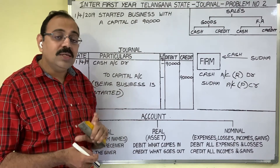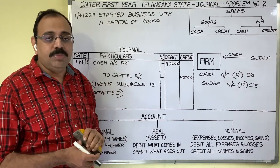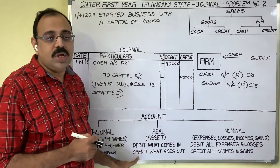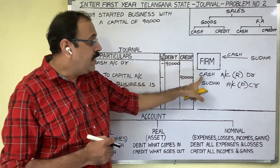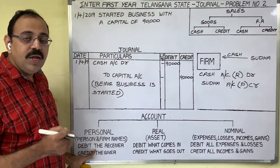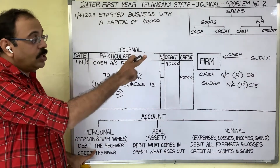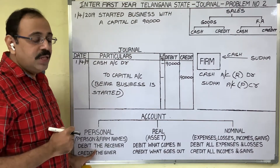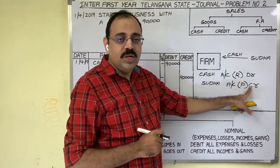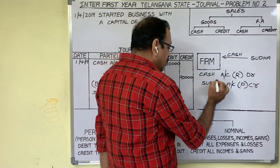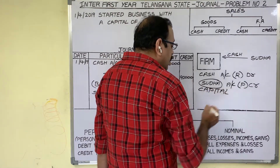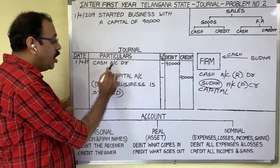Grouping is completed. Now the last step: apply the double entry principles. For real account, the rule is debit what comes in, credit what goes out — cash is coming into the firm, therefore debit cash account. For personal account, the rule is debit the receiver, credit the giver — Sudha is giving money to the firm, she is a giver, therefore credit Sudha's account. When the owner's name comes on credit, instead of writing the owner's name we write the word 'capital'. Final entry: Cash account Dr. to Capital account. Narration: being business started.